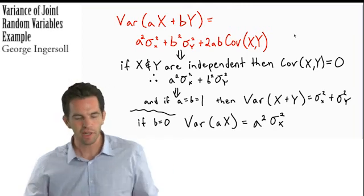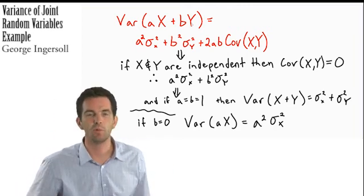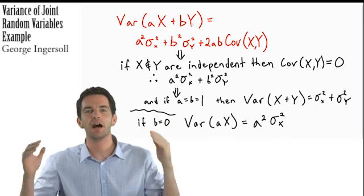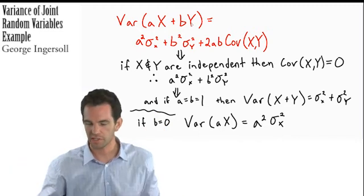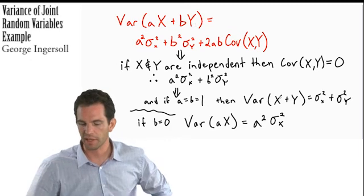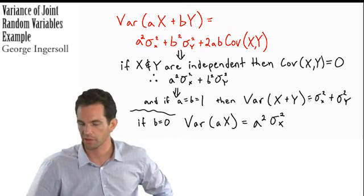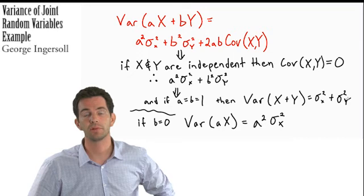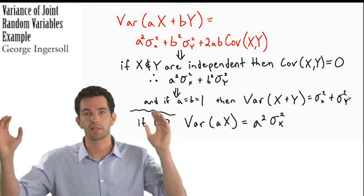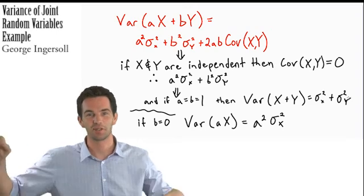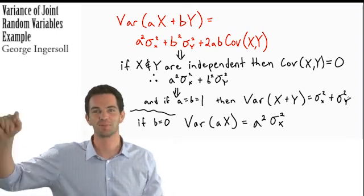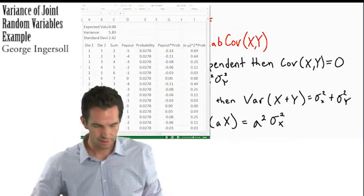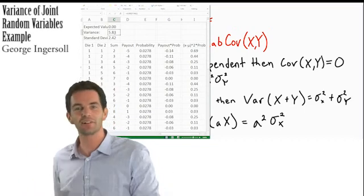We're looking for the variance of X + X + X... one hundred times. Since they're independent events, the variance of X plus Y equals variance of X plus variance of Y, and that holds true a hundred times over. So it's just variance of X added together 100 times, which equals 100 times the variance of X. The variance of a $1 bet is 5.83, so we're just adding that together 100 times.